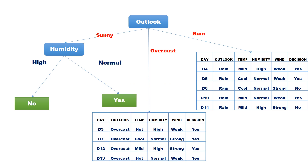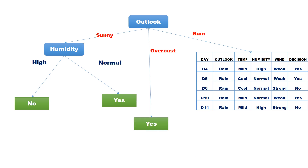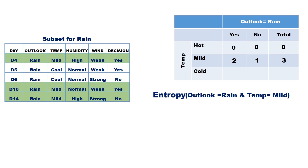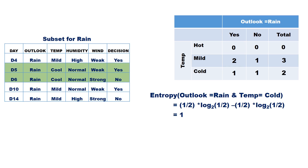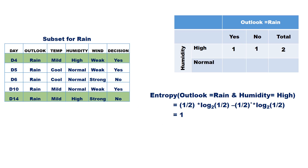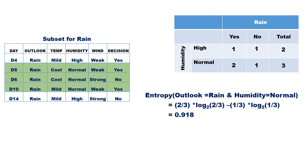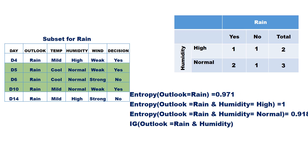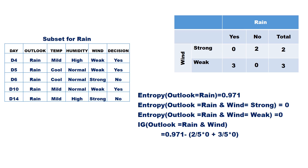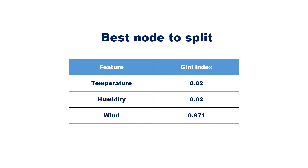All records with outlook equal to overcast have the same class label, so it is made a leaf node with value yes. The records with outlook equal to rain have mixed class labels, so we need to split the subset for rain. There are no records with outlook equal to rain and temperature equal to hot. Entropy for rain and temperature mild is 0.918, and for temperature cold is 1, giving information gain 0.02. Entropy for rain and humidity high is 1, humidity normal is 0.918, giving information gain 0.02. Entropy for rain and wind strong is 0, wind weak is 0, giving information gain of 0.971. Wind has the highest information gain.